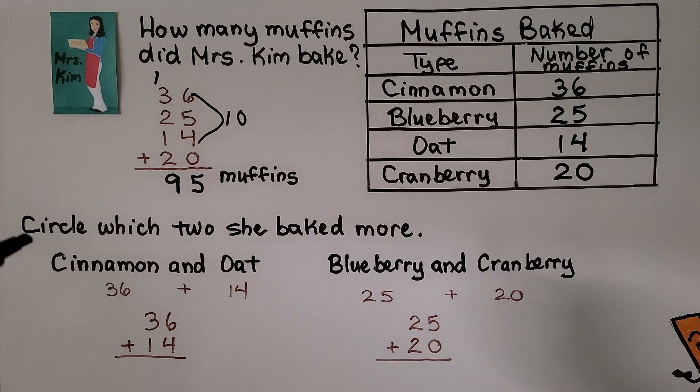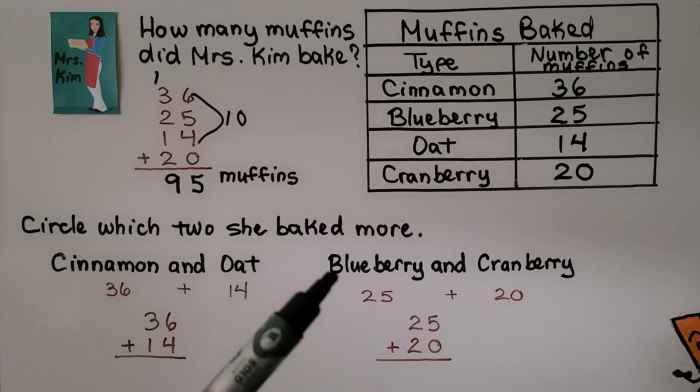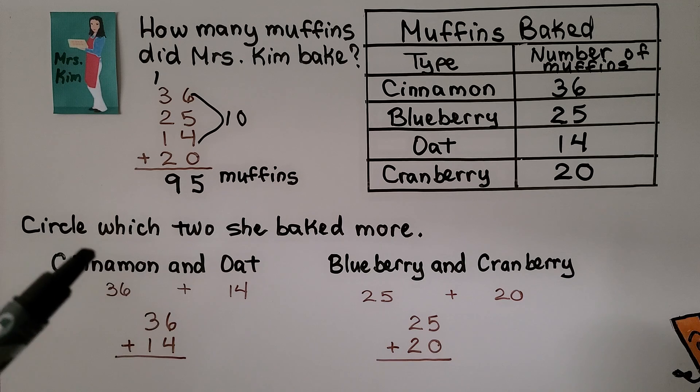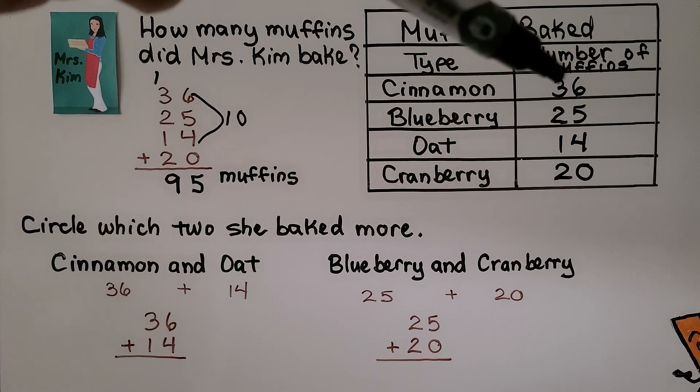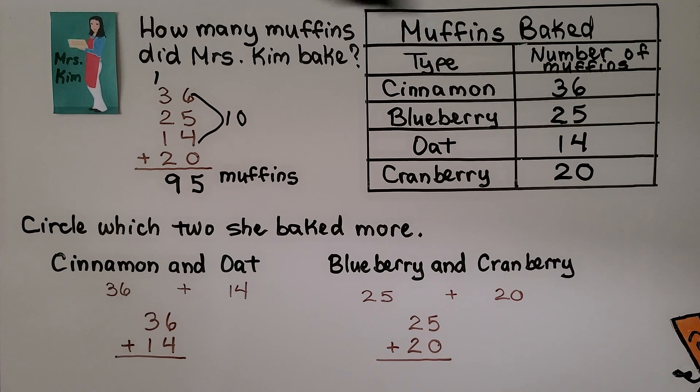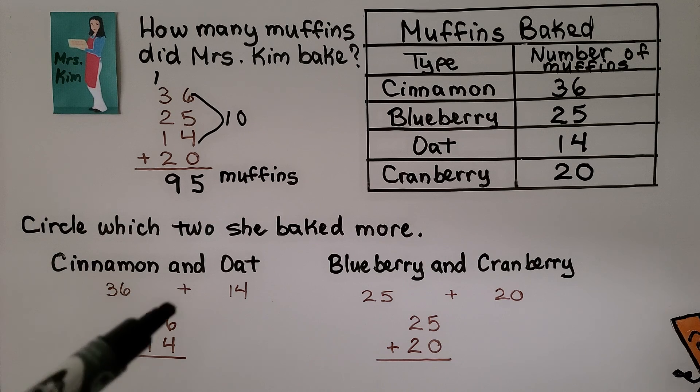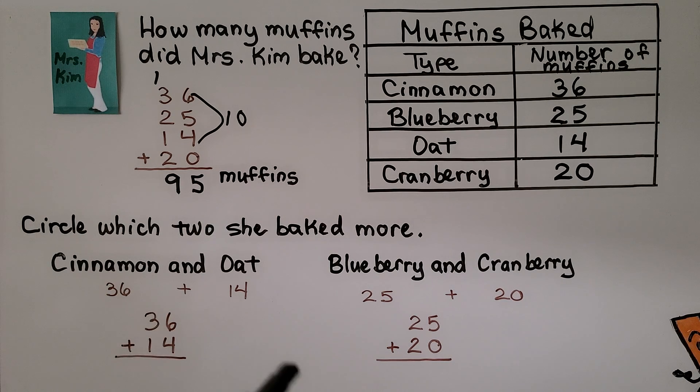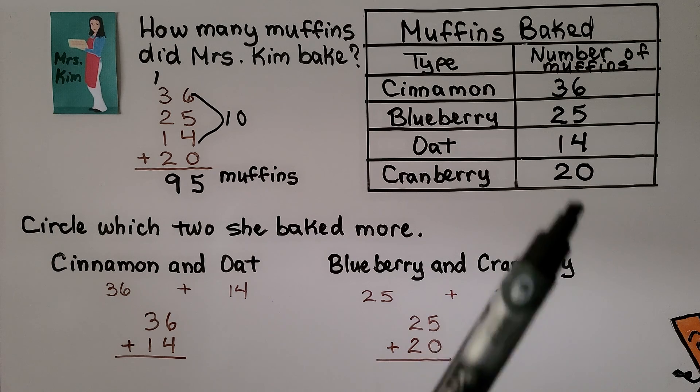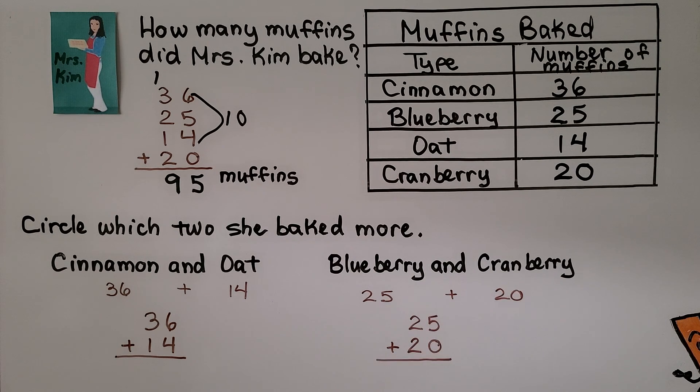Now it's telling us, circle which two she baked more: cinnamon and oat or blueberry and cranberry. Well, cinnamon is 36, oat is 14. We need to add 36 plus 14. Blueberry is 25, cranberry is 20. We need to add 25 plus 20.